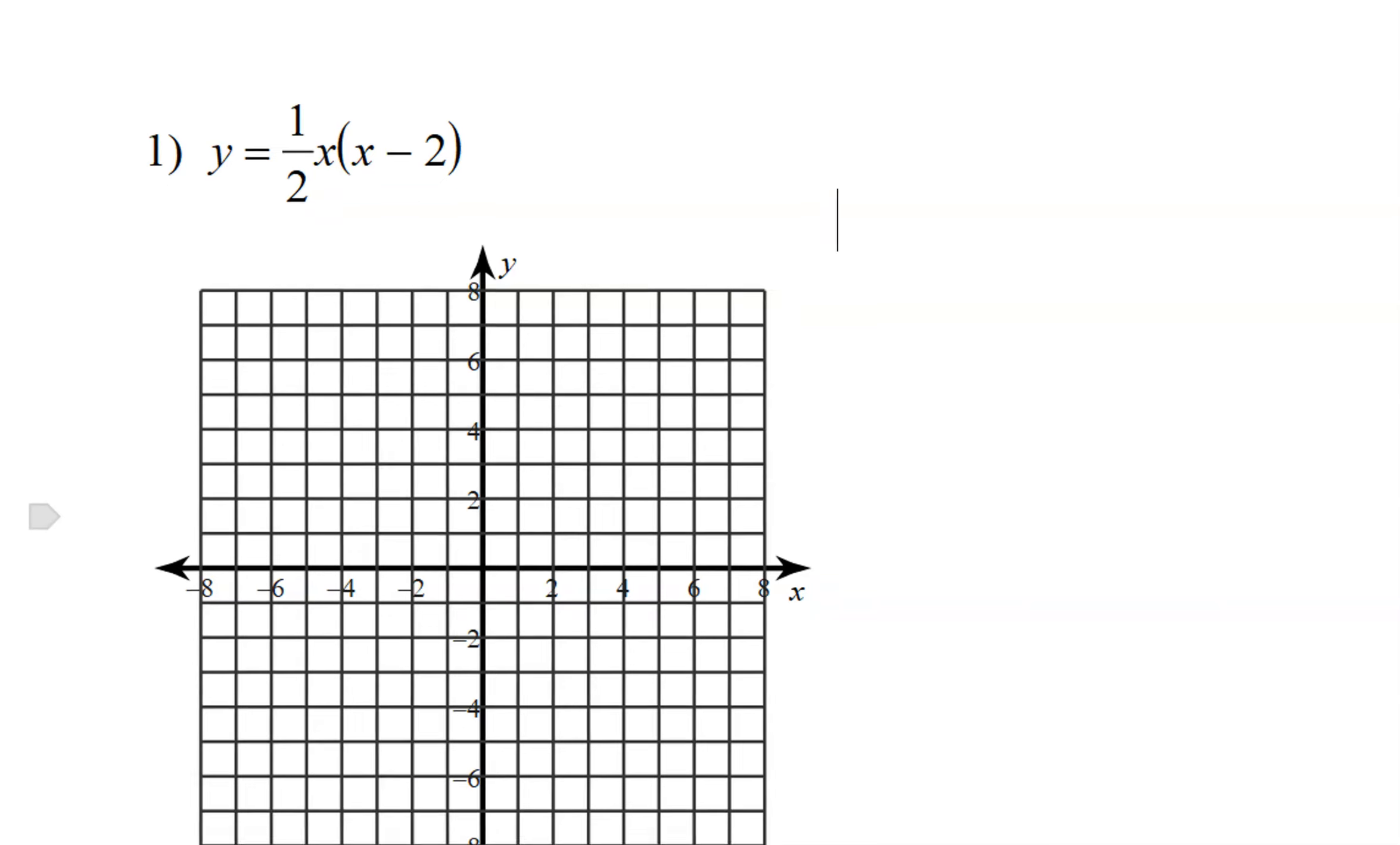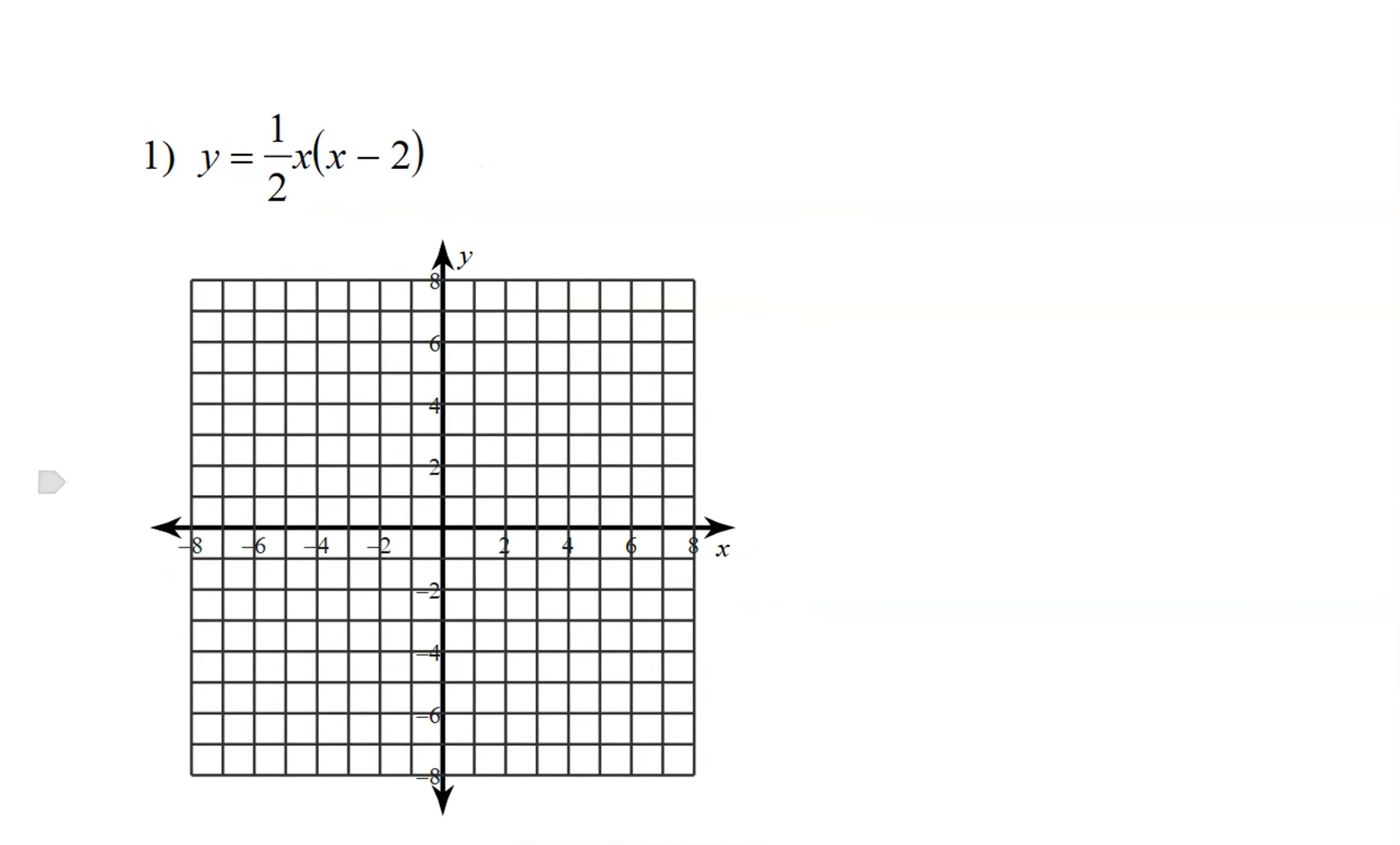Okay, we're going to go over the first three problems in the review for your test. The first one is in intercept or factored form. We can tell because we have the parentheses, but they're not squared.